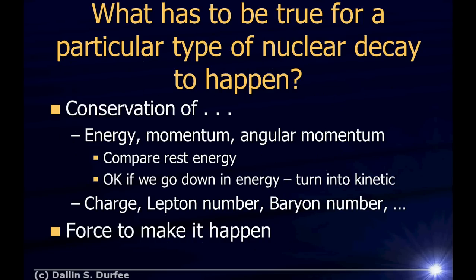What has to be true for a particular type of nuclear decay to happen? Conservation laws must be obeyed: energy, momentum, angular momentum, charge, lepton number, and baryon number. If you look at the rest energies of what you start with and end up with, going down in energy is okay — you can turn some energy into kinetic energy — but going up in energy is not allowed, and that decay won't happen. In addition, there needs to be some force that makes it happen. Electrons do not interact via the nuclear strong force, so beta decay doesn't happen through the strong force — there's another force called the nuclear weak force that makes it happen, which is why beta decay is slower. Nuclear physics is a very rich and interesting field with a lot more to learn.